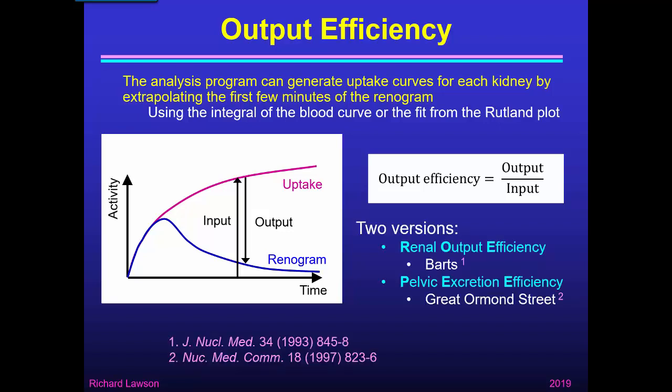There are actually two slightly different versions. St Bartholomew's Hospital in London suggested renal output efficiency (ROE), whereas Great Ormond Street Hospital suggested pelvic excretion efficiency (PEE). Pelvic excretion efficiency is calculated by generating the uptake curve by extrapolating from the Rutland plot, whereas renal output efficiency is calculated by using the integral of the blood curve. But as long as background subtraction is correct, both methods will give very similar results — these two techniques are virtually equivalent.